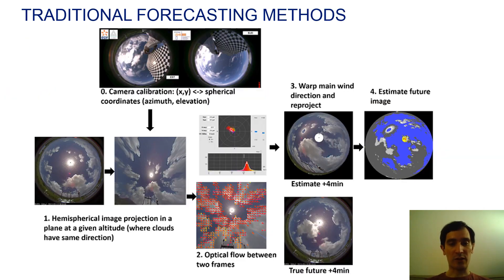The traditional forecasting method at EDF consists in the following steps. First, fisheye camera calibration with calibration patterns and the OCam Calib toolbox. Second, projection of the hemispherical images on a plane at a given altitude.